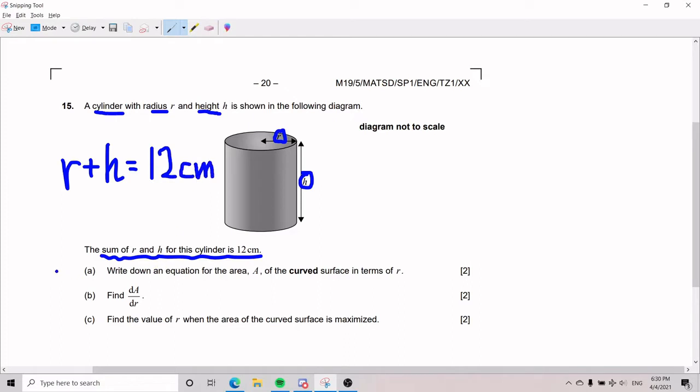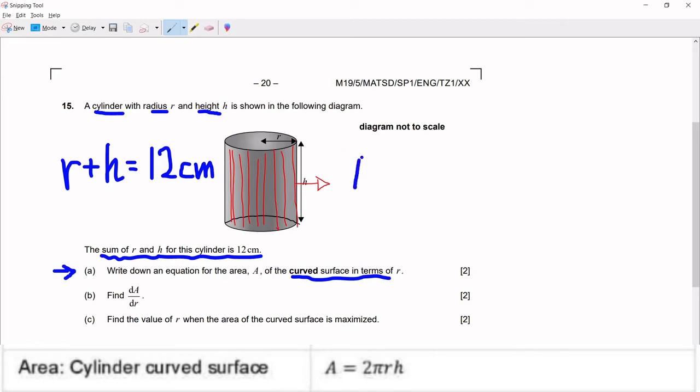Part a asks us to write down an equation for the area A of the curved surface in terms of r. Because they are asking for the curved surface specifically, when we write the area of the cylinder, we're going to leave out both circles - the circle on top and circle on bottom. We're going to leave out the circles and just write down the area of the curved surface. We go to the formula booklet and find that for the curved surface of a cylinder, the area is 2πrh.